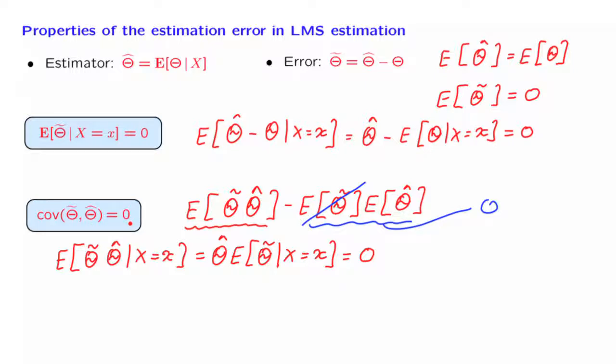Using this fact, now we can figure out that the following is true. We write the random variable theta as the sum of theta hat minus theta tilde. This comes simply from this definition here, by just moving theta to this side and theta tilde to the other side. So theta is the difference of two random variables, and these two random variables have 0 covariance.